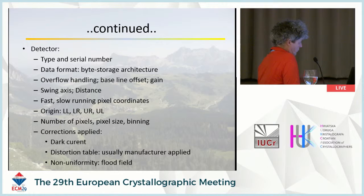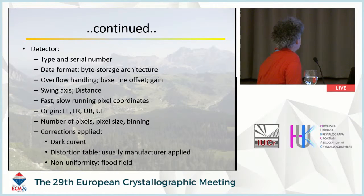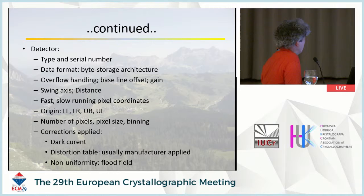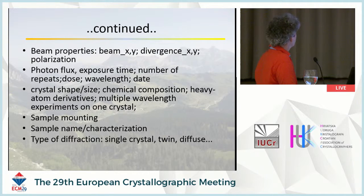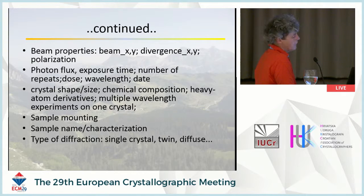We also need to know which corrections have already been applied to the raw images, because raw images are often not truly raw — dark current may have been subtracted, distortion correction may already have been applied by the manufacturer, and non-uniformity corrections may be applied. For beam properties, we need the position of the primary beam, divergence in two directions, polarization, photon flux, exposure time, number of repeats, dose, wavelength, and date.